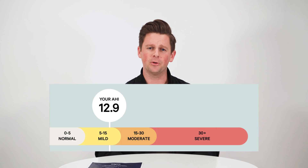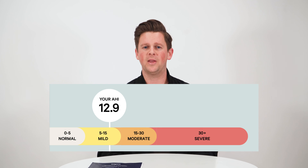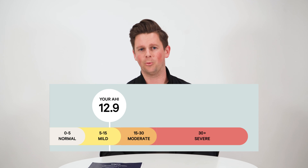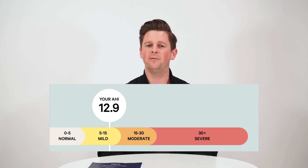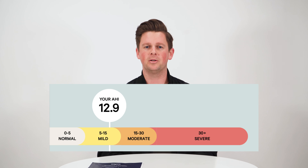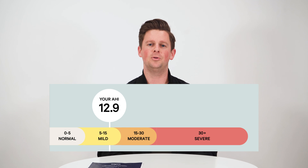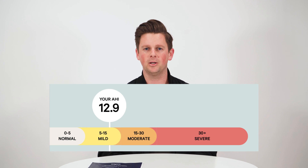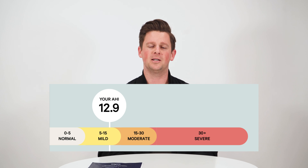It's also put into a range, and that's how they diagnose the severity of your sleep apnea. If you're having 0 to 5 events per hour, that's going to put you in the normal range. Anything between 5 to 15 events per hour is considered mild, 15 to 30 is considered moderate, and anything over 30 is considered severe.